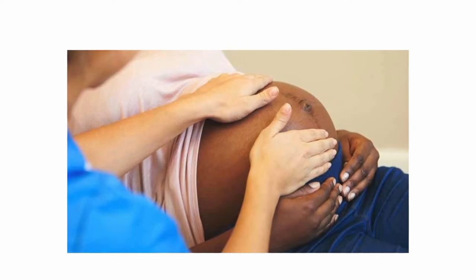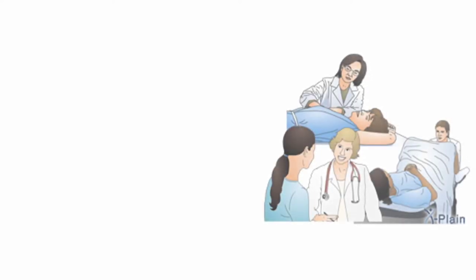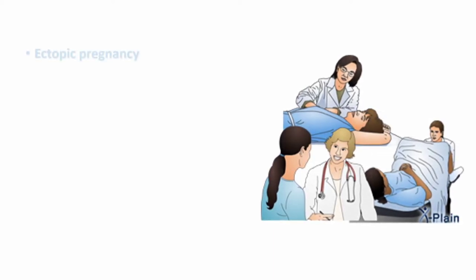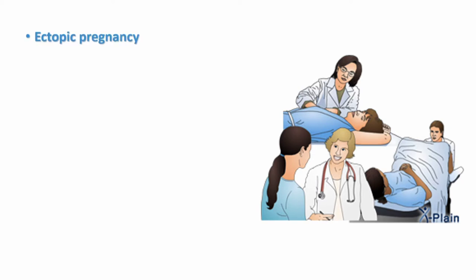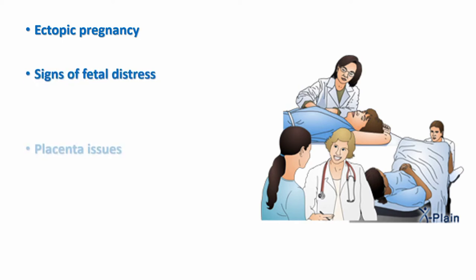Such complications include ectopic pregnancy, where the fetus grows outside of the uterus, and fetal distress, where the fetus is receiving a low oxygen supply because of problems with the placenta, like placental abruption or placental insufficiency, and sometimes problems with the umbilical cord like a knot or prolapse. We will see details about that later.